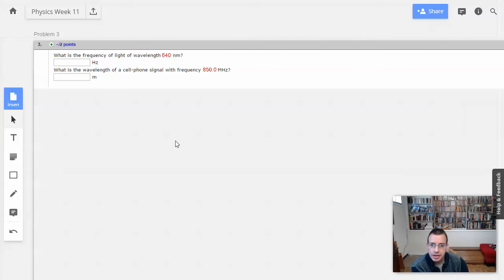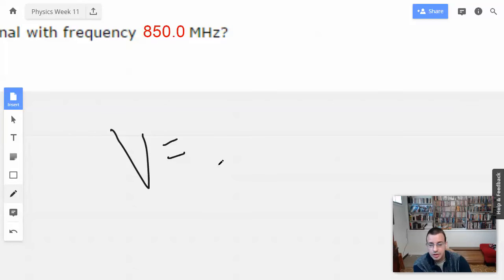All right, so let's start with P for pen. So velocity equals, zoom in, there we go. Velocity equals distance divided by time, which is similar to wavelength times frequency.